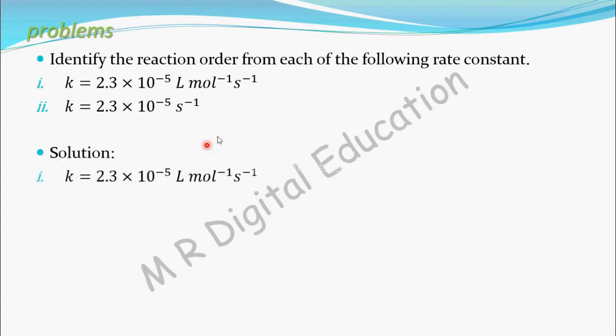Solution: Consider the first one, that is 2.3 times 10 to the power minus 5. Clearly given the unit of k as liter per mole per second. You know that for second order reaction, unit of rate constant is liter per mole per second. So this is second order reaction.